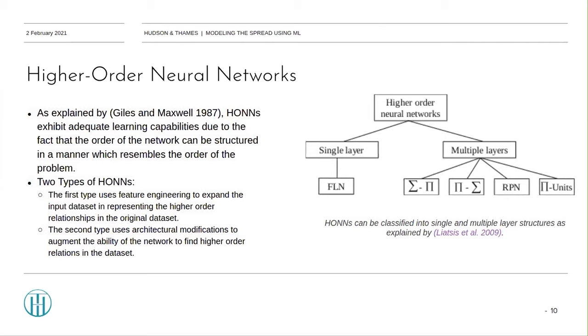Typically, higher-order networks are split into two types. The first type uses feature engineering to expand the input dataset to represent higher-order relationships in the original dataset. The second type uses architectural modifications to augment the ability of the network to find higher-order relations in the dataset.